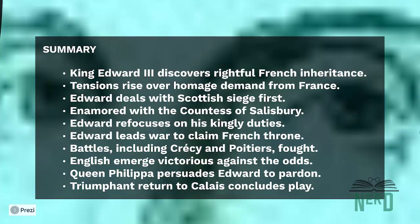Back in Calais, the English triumph and the citizens are set to surrender. Edward demands punishment for some, but his wife, Queen Philippa, persuades him to pardon them. More successes come, but they are tempered by news of the prince's supposed defeat. However, Prince Edward arrives with the captured French king, turning the tide in favour of the English. The play concludes with the English celebrating their triumphant return to Calais.